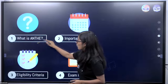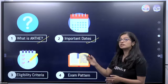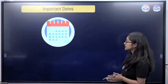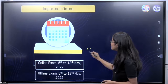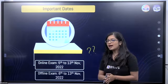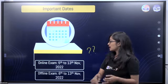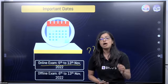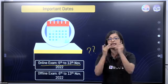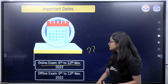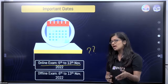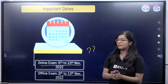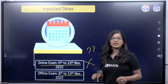We have looked at what ANTHE is. Now let's look at some important dates you must remember. You must have an understanding of when these exams are going to happen. The online exams will happen between 5th to 13th of November — mark these dates and keep them in your calendar. If you want the offline exams, they are going to happen between 6th to 13th of November. These dates are important.